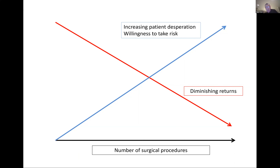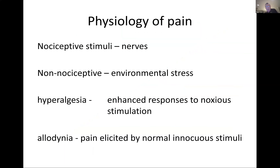You will see surgeons repetitively operating on the same patient and wonder what's going on. The patient may be poor substrate or have social issues. It's obvious when you're not the surgeon, but if you are the surgeon you can get emotionally sucked in. When you operate on somebody you have an emotional bond and sense of responsibility, and your threshold to re-operate becomes lower than if you were looking at someone else's complications.